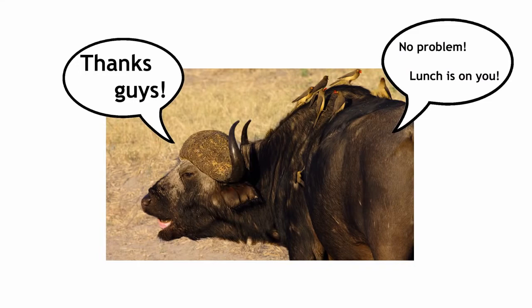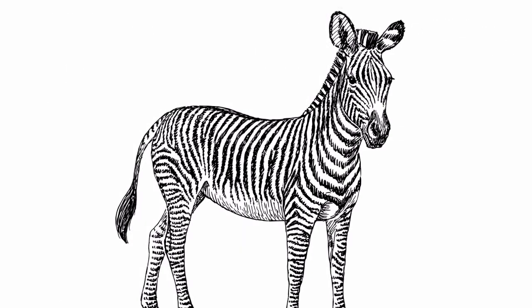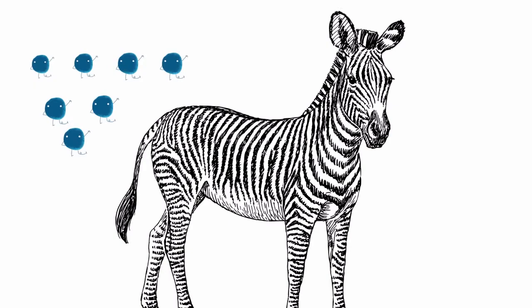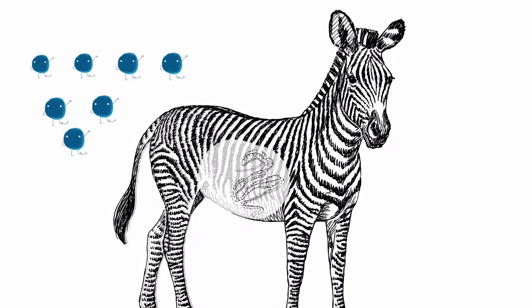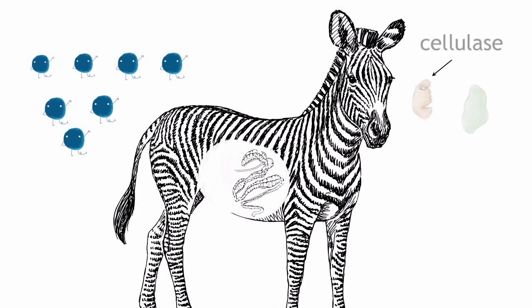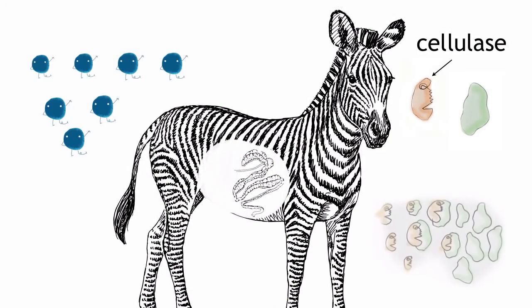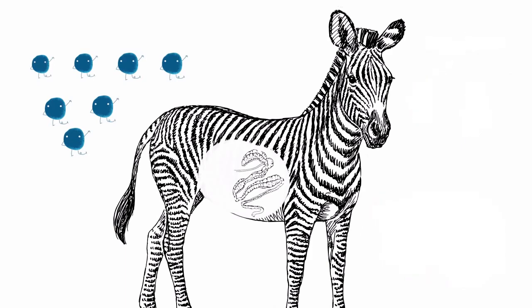Another example of mutualism is the interaction between zebras and bacteria. Zebras rely on certain bacteria in their gut. The zebras benefit from the enzyme called cellulase that the bacteria produce, which helps them to break down their food. In turn, the bacteria benefit by having a stable supply of nutrients and by living in the host intestine.